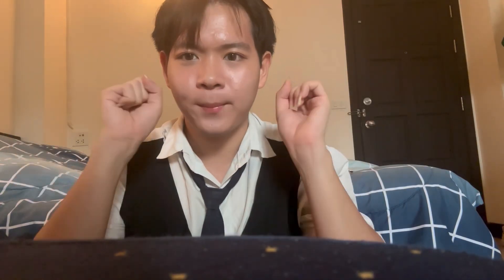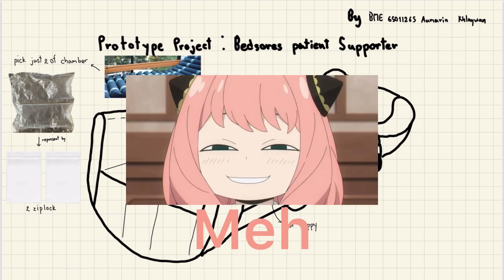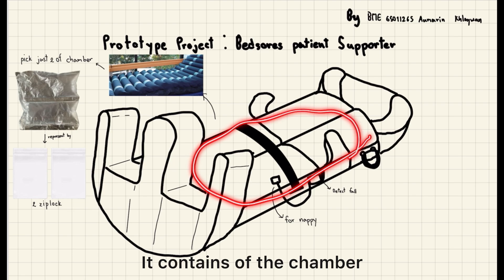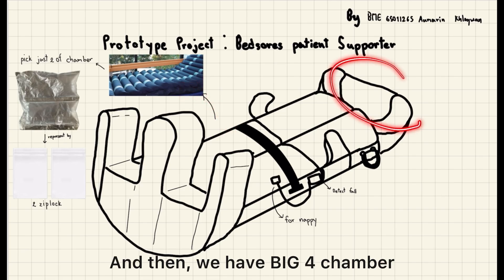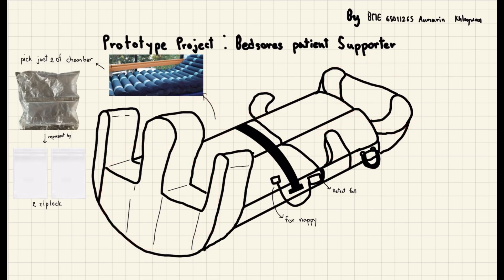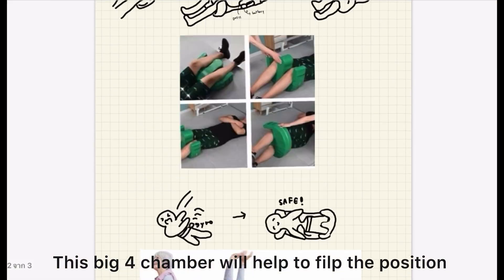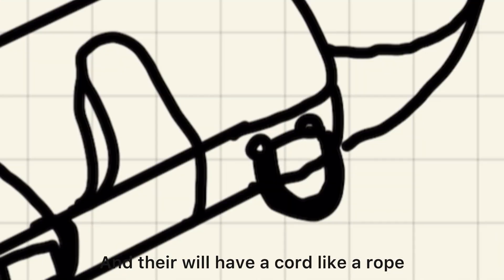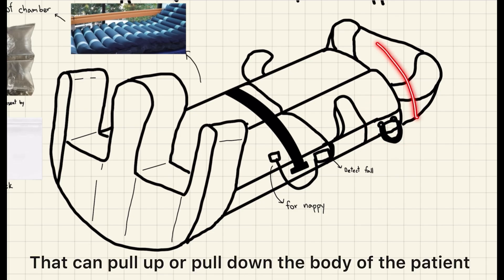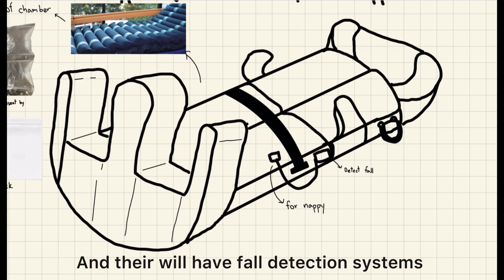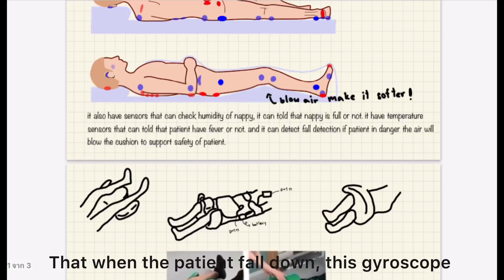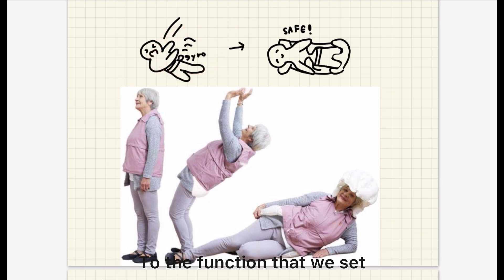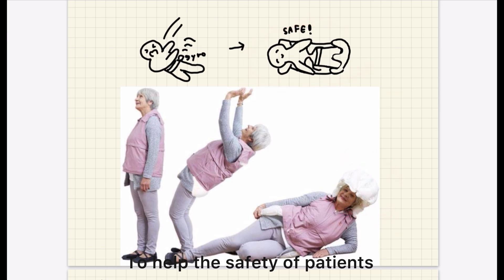This is my design for the base supporter. This one contains chambers. We also have four big chambers that will help to flip the position of the patient like this. Then we have a cord like a loop that can pull up or pull down the body of the patient. And we have four fall detectors — when the patient falls down, this system will activate and send functions to help the safety of the patient.